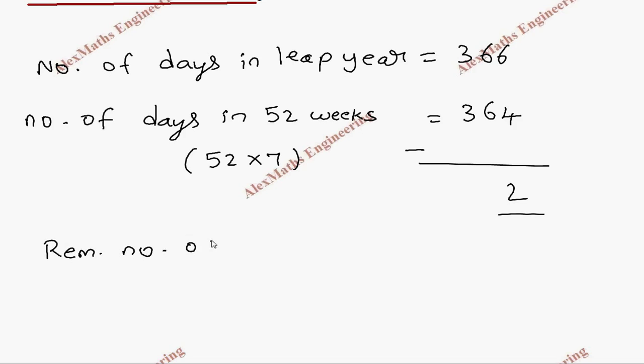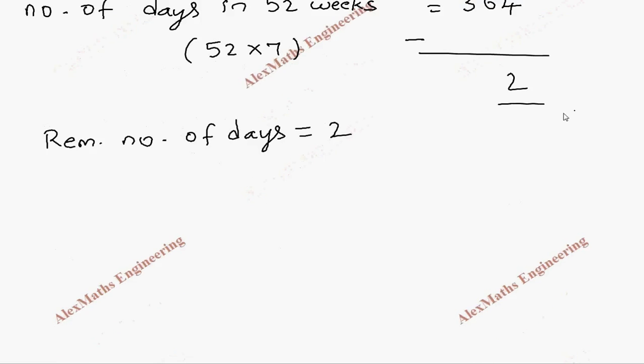So we can say remaining number of days equals 2. And this two days combination will be either Sunday Monday—it has to be consecutive days—or it can be Monday Tuesday, or it can be Tuesday Wednesday.